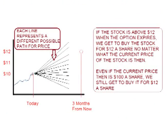Let's say the stock is at or above $12 in three months. The option is exercised and we get to buy that stock for $12 — even if the stock is $13, $14, $20, or $100, we still get to exercise the option and buy the stock for only $12. We get to buy the stock for $12, but the price or value of the stock at the time will either be $12 or more than $12 — the stock price could be any amount $12 or above.